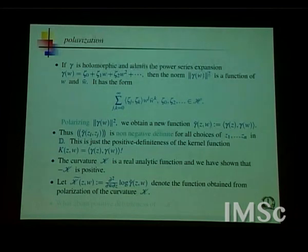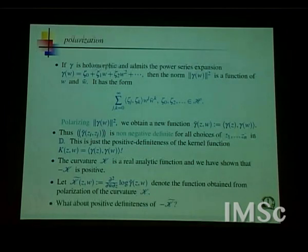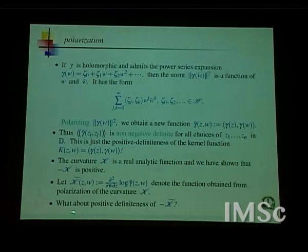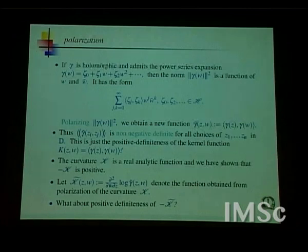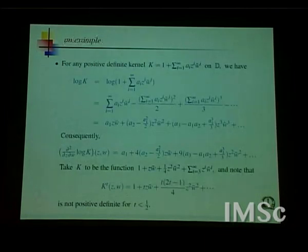This is the main new ingredient: I am going to ask whether, after polarizing, the curvature is not only negative but actually negative definite — or equivalently, with a minus sign, positive definite. That is the stronger requirement. Here is another simple calculation: start with any positive definite kernel on the unit disk, take the log, combine coefficients, compute the curvature, and for a particular choice of kernel — of the form (1 + z w̄/4 + …) — you look at its t-th power.